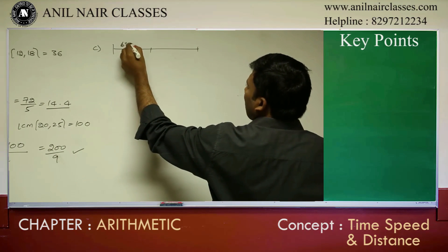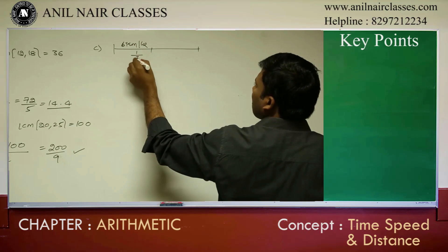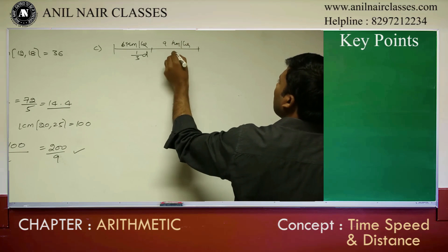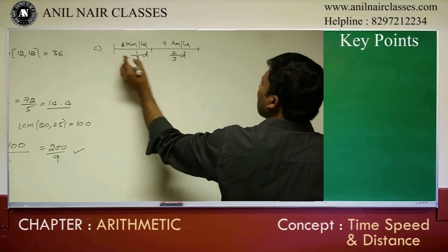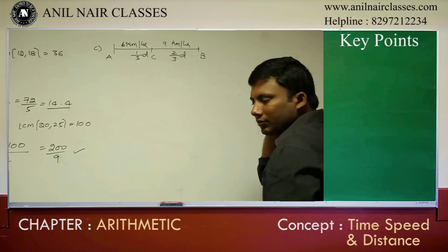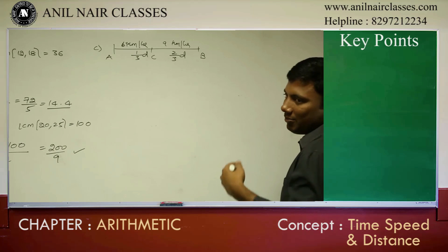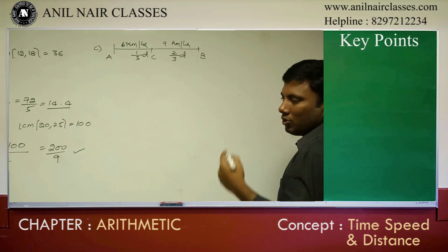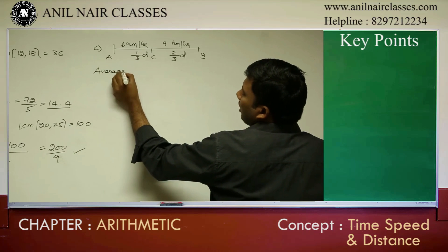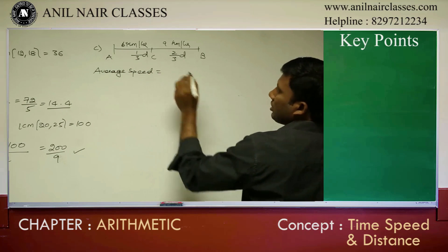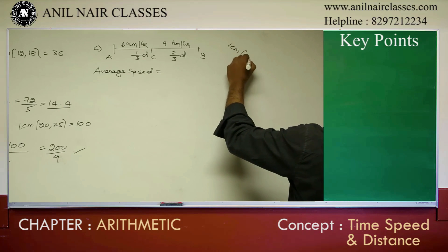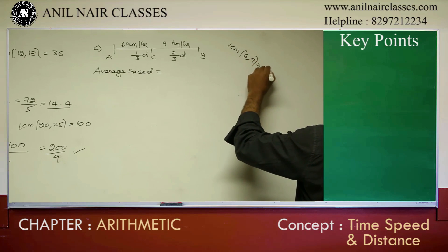A person travels at 6 kilometers per hour for one-third of the distance, and 9 kilometers per hour for two-thirds of the distance, going from A to B to C. He is not going and coming back — only doing a two-leg motion. So average speed equals total distance by total time. LCM of 6 and 9, which will be 18 kilometers.